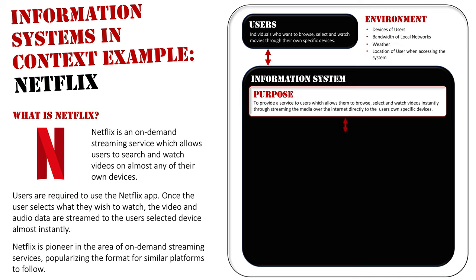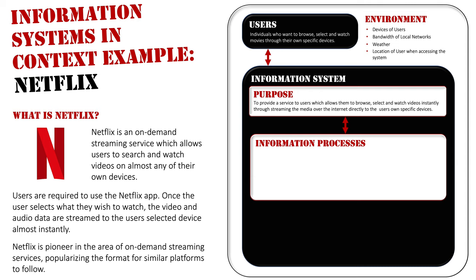Let's now go into the information processes — our seven information processes. The first is collecting. Users will enter text which can come through a remote or keyboards, allowing them to type in their search criteria or go through the menus in the Netflix app to make choices about what they want to watch. They go through menus selecting movies, selecting genres, putting things on their favourites list, rating movies — all coming through keyboards, remotes, and touchpads on the device they are using.